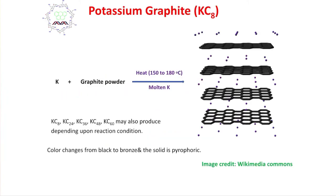If you look at this molecule, this is nothing but a kind of intercalated compound. Let's learn the synthesis. Potassium when reacted with graphite near about 150 to 200 degrees Centigrade.